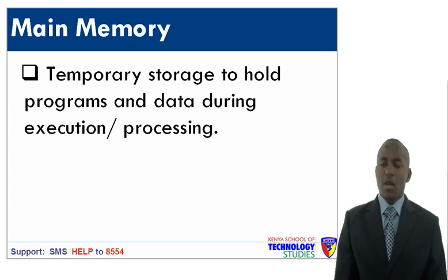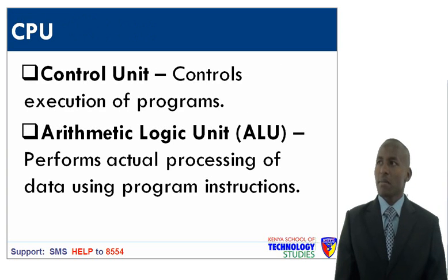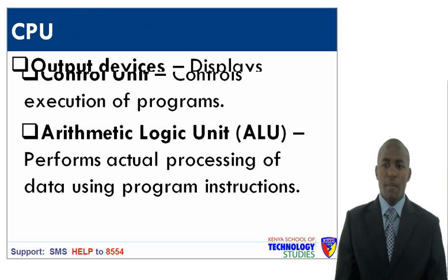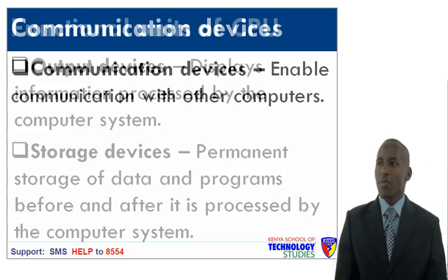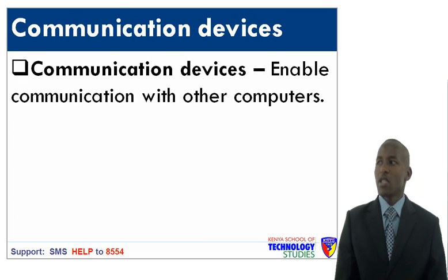Main memory is temporary storage used to hold programs and data during execution or processing. The control unit controls execution of programs. The arithmetic logic unit performs actual processing of data using program instructions. Output devices display information processed by the computer system. Storage devices provide permanent storage of data and programs before and after processing. Communication devices enable communication with other computers.